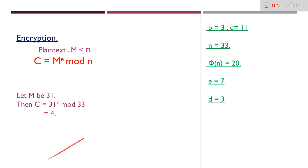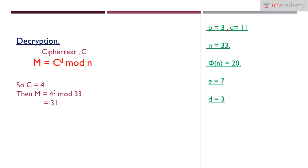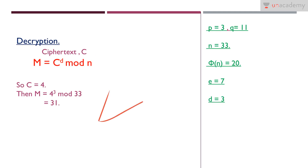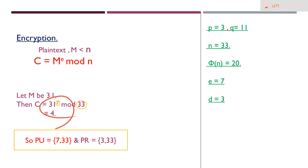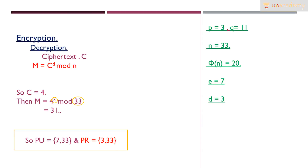For decryption we have ciphertext C equal to 4. The decryption equation is: m = C^d mod n, which becomes 4^3 mod 33. This gives us 31, which is the original plaintext. This confirms the process: the public key (7, 33) is used for encryption, and the private key (3, 33) is used for decryption, consistent with public key cryptography principles.